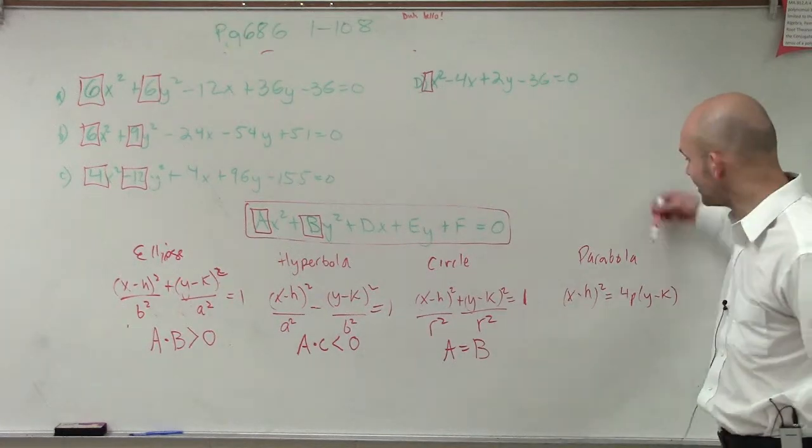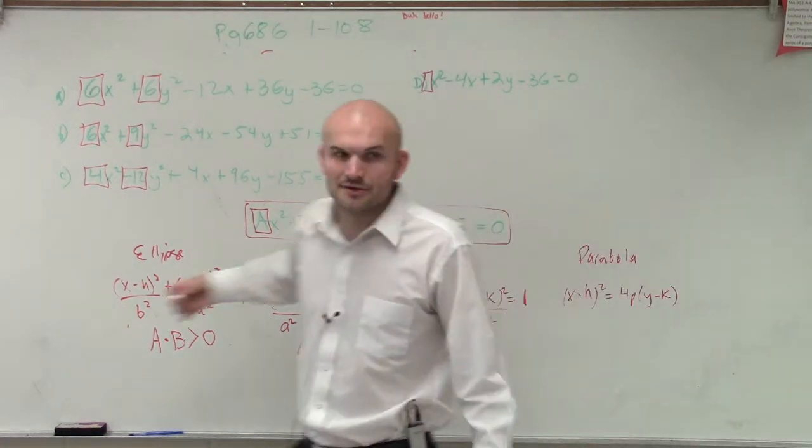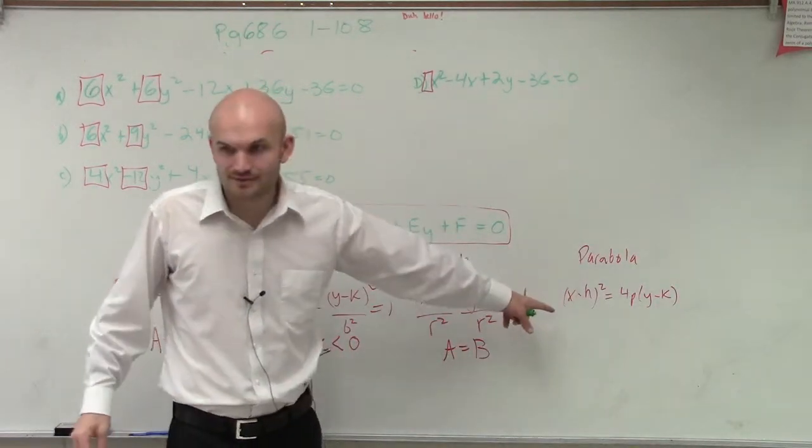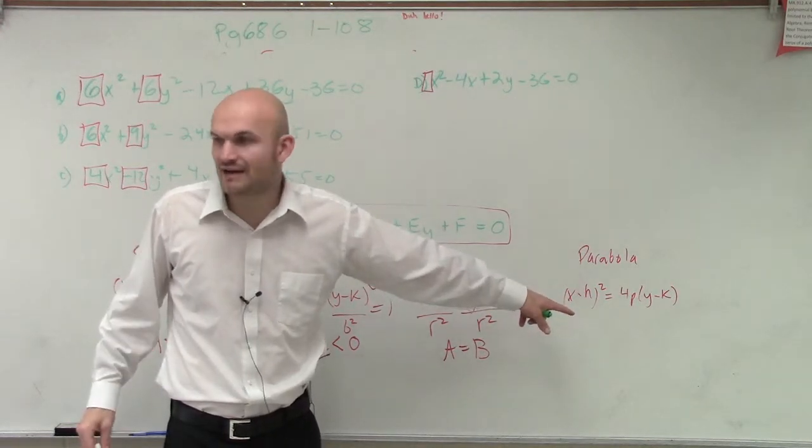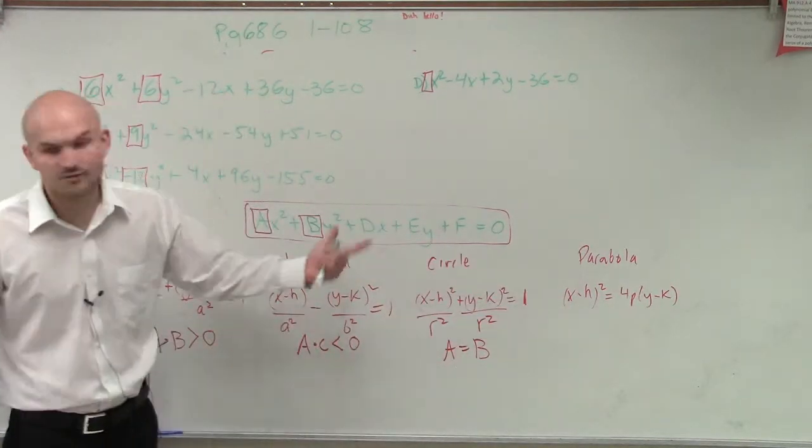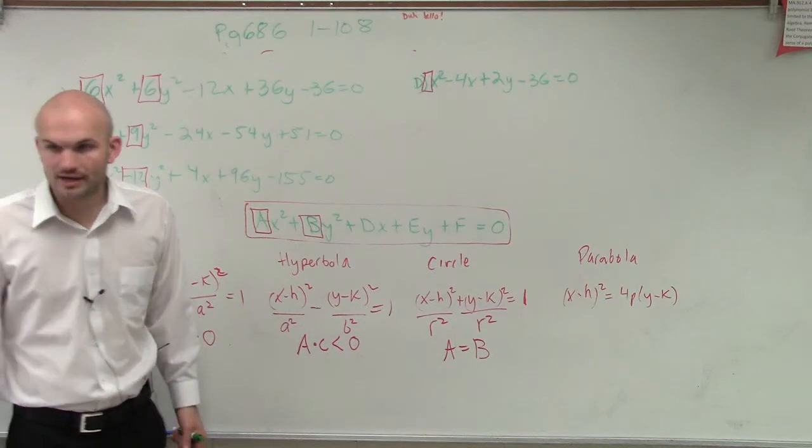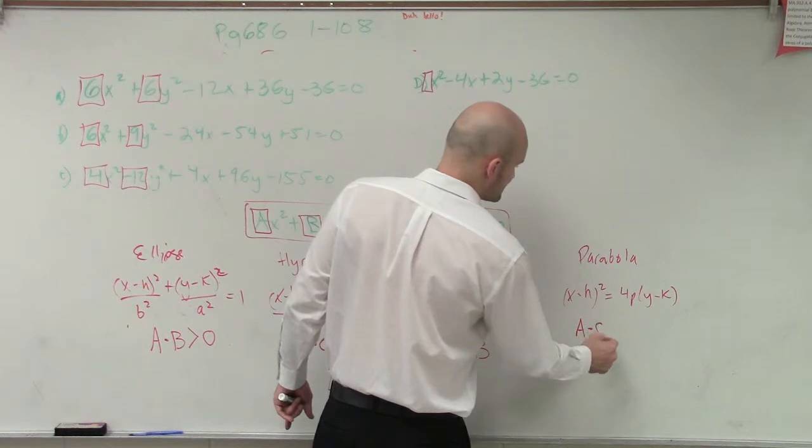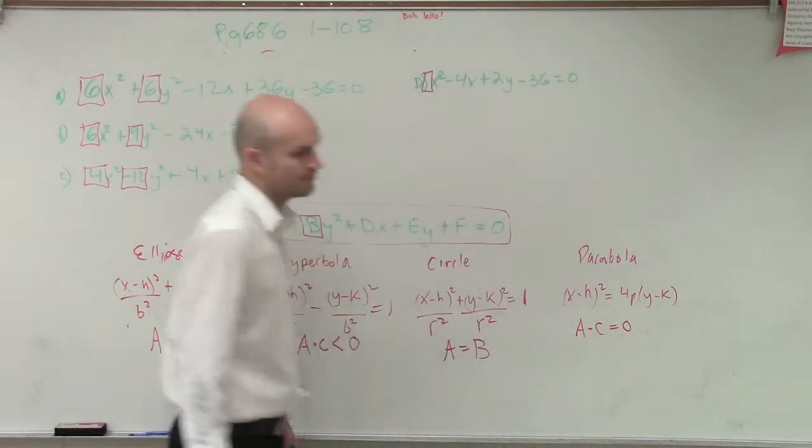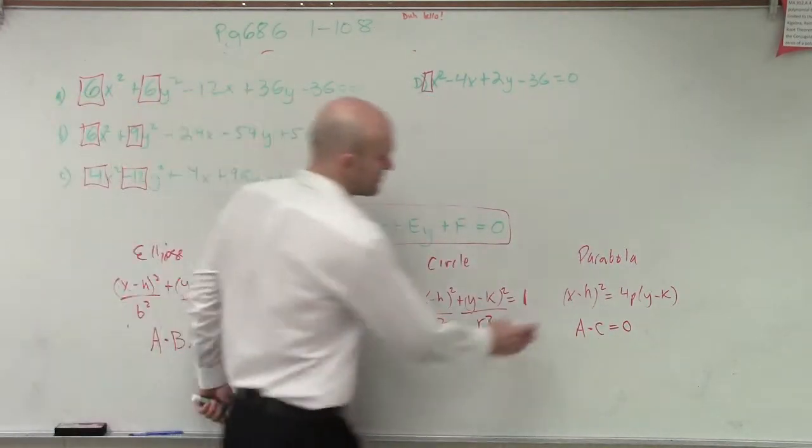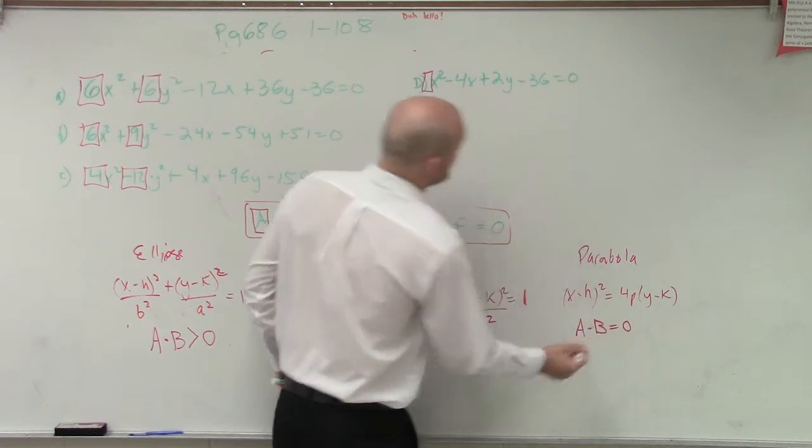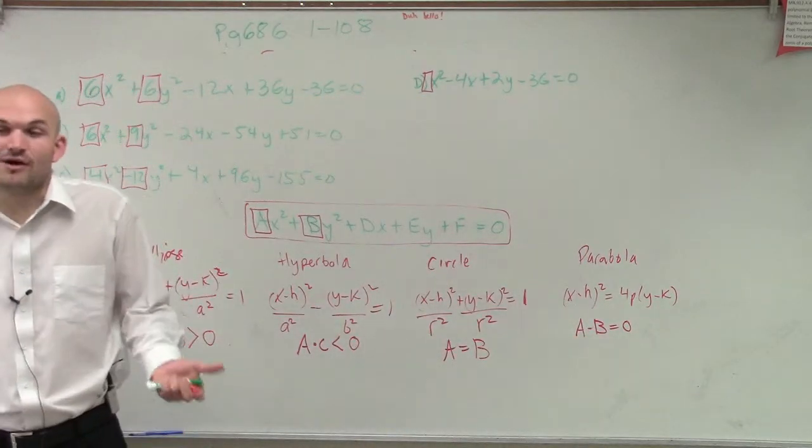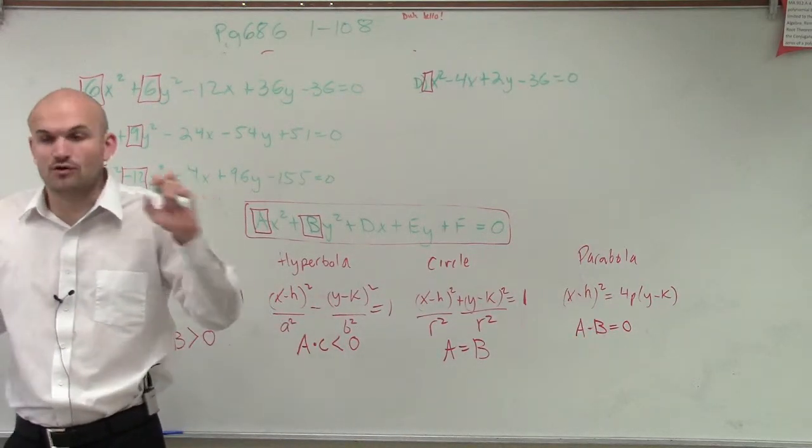And then a parabola is very helpful, because when we look at a parabola, we only have one x squared, right? We don't even have another x squared. We don't even have a y squared. We're only provided with one square value, right? So therefore, you could say when A times C equals 0, or A times B - because therefore, if I don't have an x squared or a y squared, then that coefficient has to be 0.